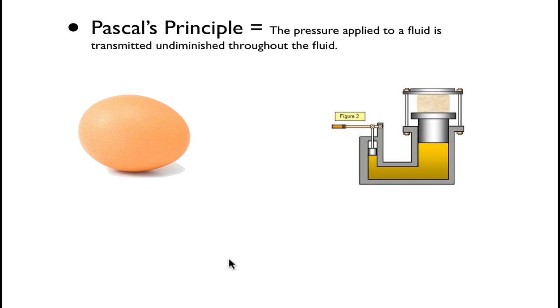The next principle we talked about is Pascal's principle. This tells us that pressure applied to a fluid is transmitted undiminished throughout the fluid. So undiminished, meaning that it doesn't change. So however much pressure you apply to it, once it's transmitted through that fluid, it's not going to be less at the end or anything like that. It doesn't change throughout that fluid.